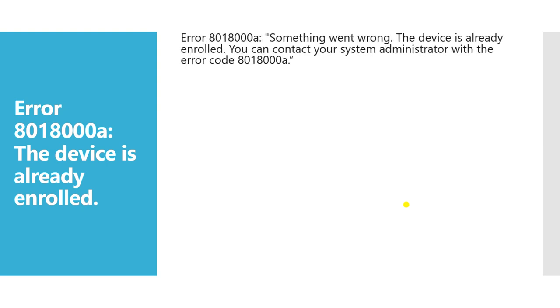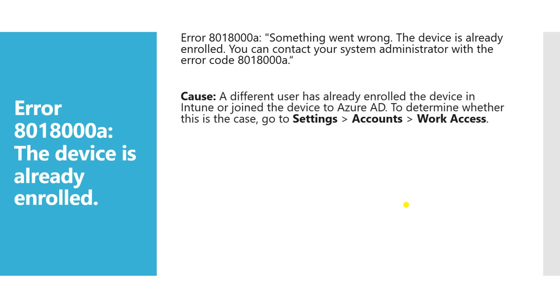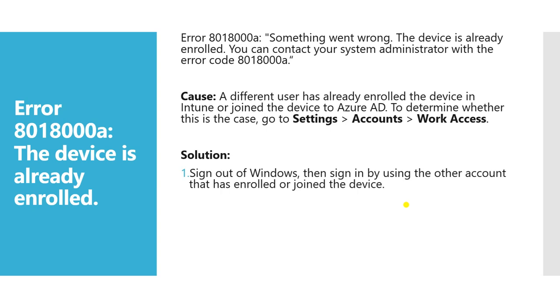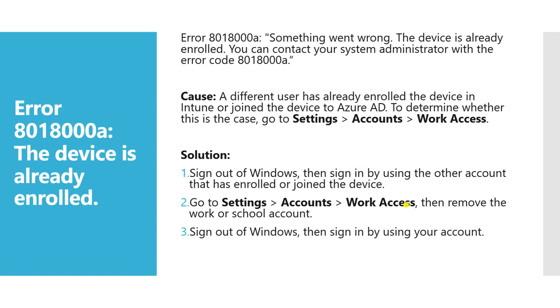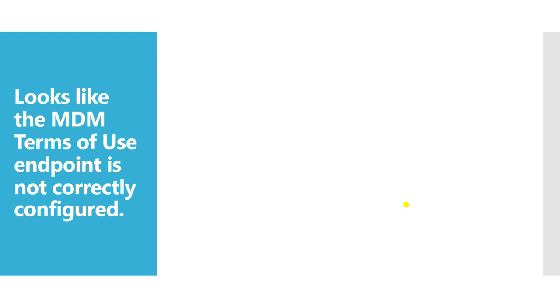Error 801800a: 'Device is already enrolled.' This error indicates something went wrong and the device is already enrolled — contact your administrator. The cause is that a different user has already enrolled the device in Intune or joined it to Azure AD. The solution is to sign out of Windows, sign in with the other account, go to Settings > Accounts > Access Work or School, remove the account, then re-enroll the device in Intune or re-join it to Azure AD.